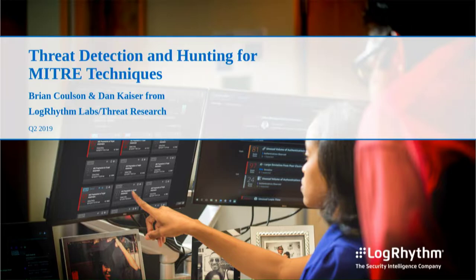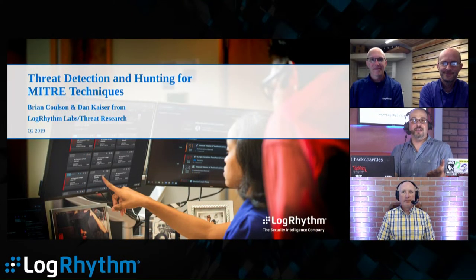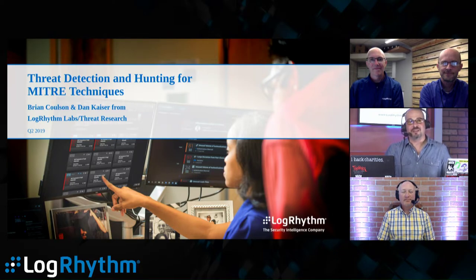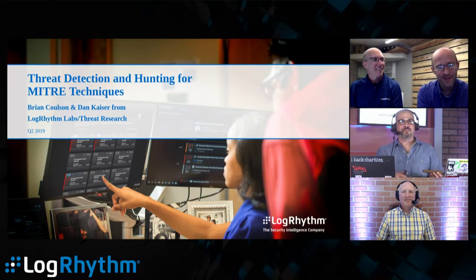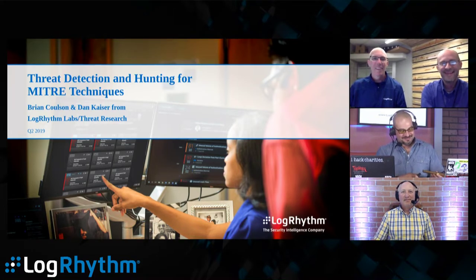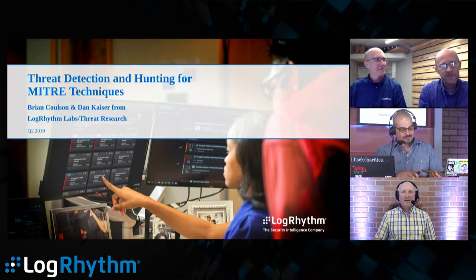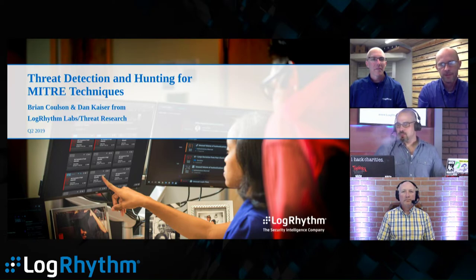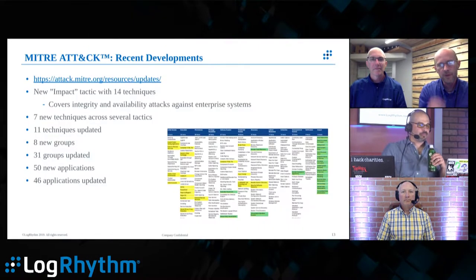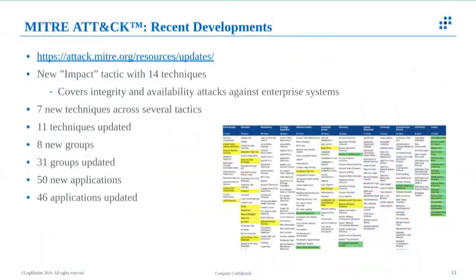That concludes the narrative of Star Wars Rogue One and how the events map back to specific MITRE ATT&CK framework items. Now I want to turn it over to Brian and Dan from LogRhythm to talk about how you would go look for these things in your network. Obviously it didn't work out so well for the Empire in their forensics investigation.